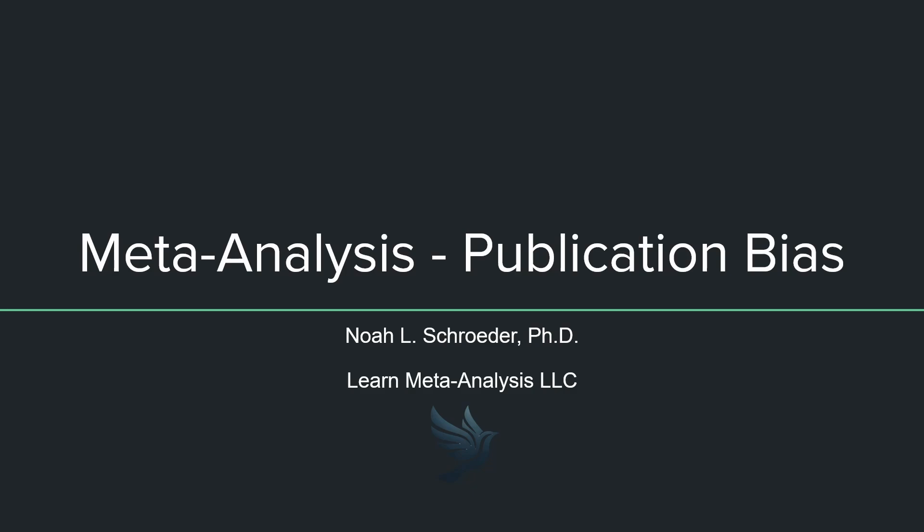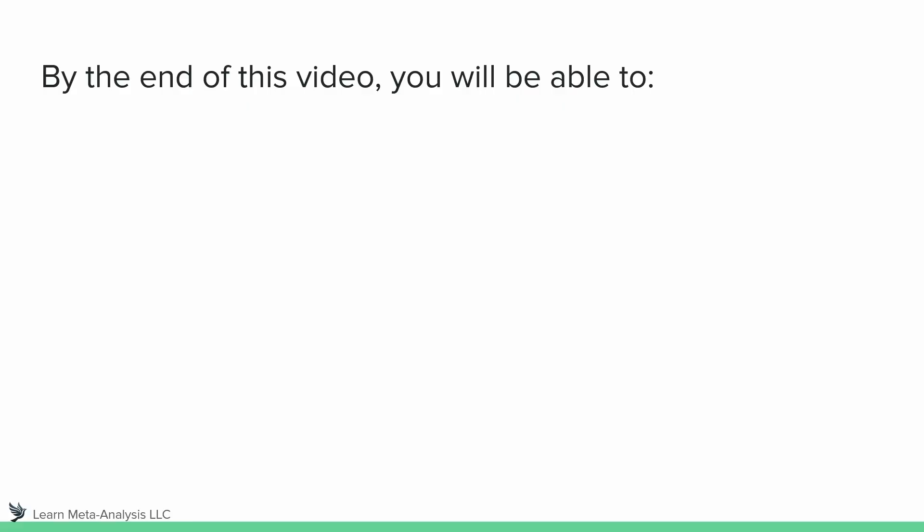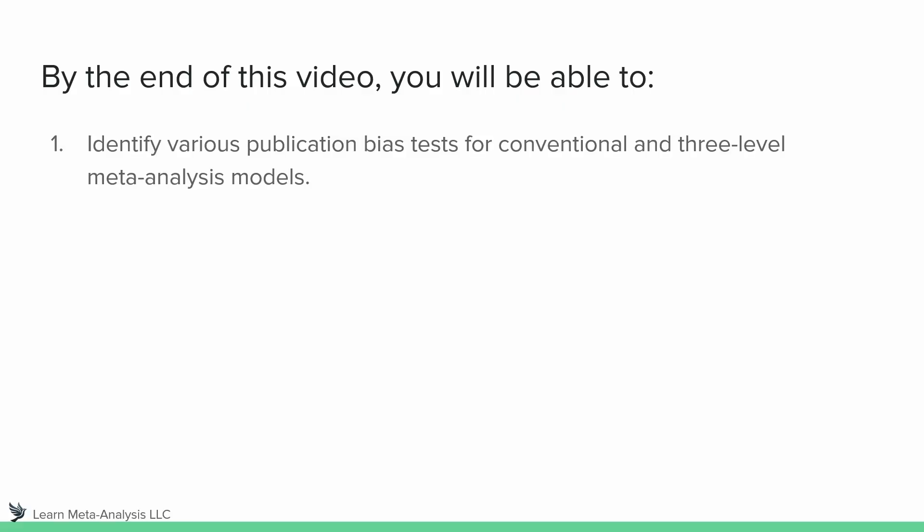This is something that you really should be familiar with if you are conducting a meta-analysis, and it's certainly something that you should try and understand if you are interpreting them. By the end of this video, I would like you to be able to identify various publication bias tests that might be used for both conventional and three-level meta-analysis models.